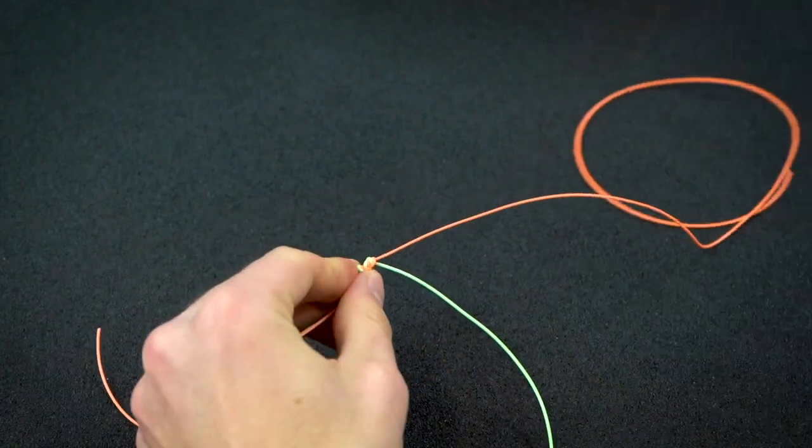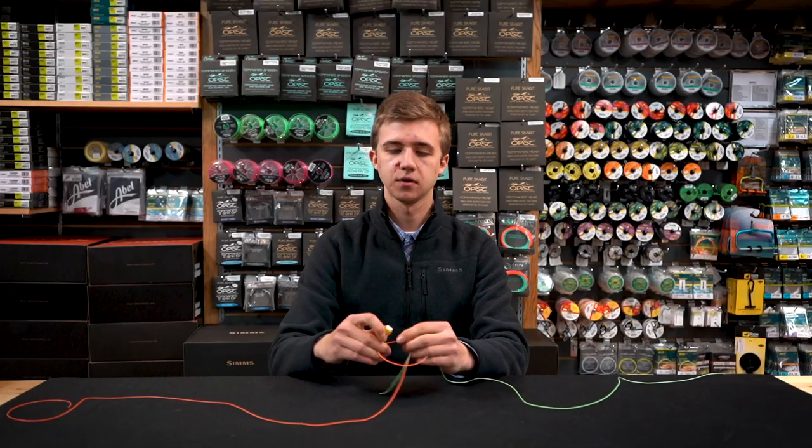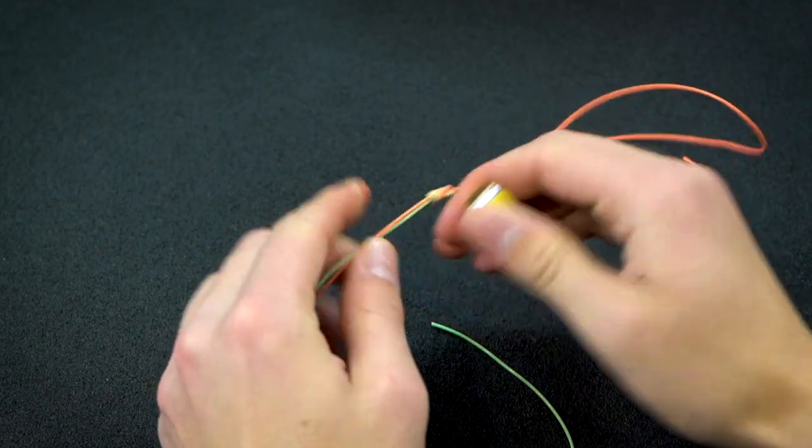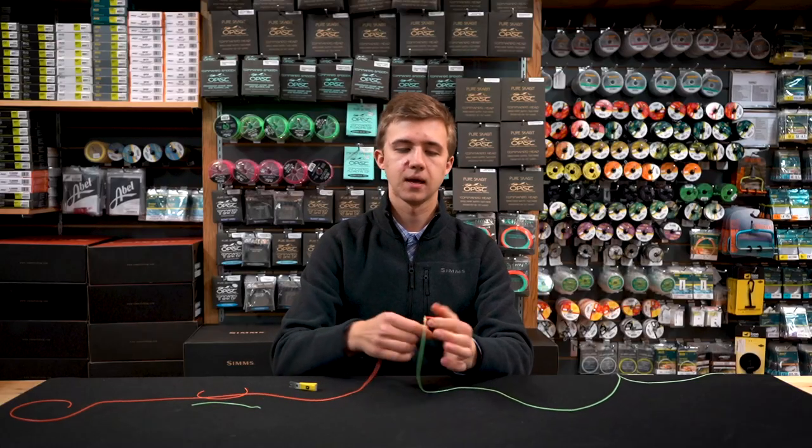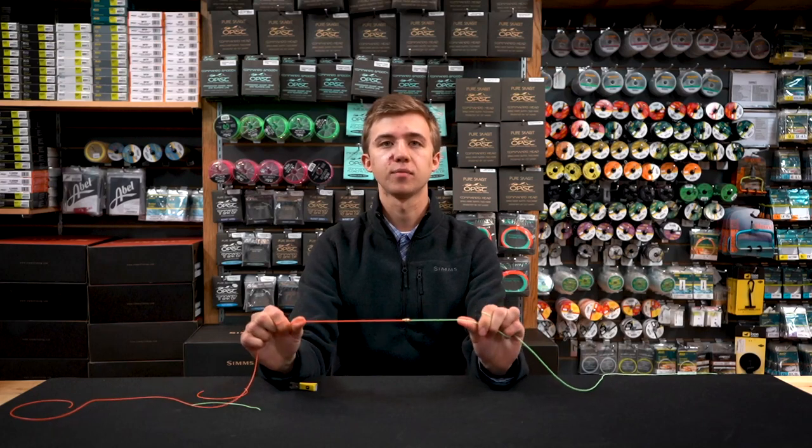Once it's seated, we can take our nippers, cut those tag ends close, and that is your double and triple surgeon's knot.